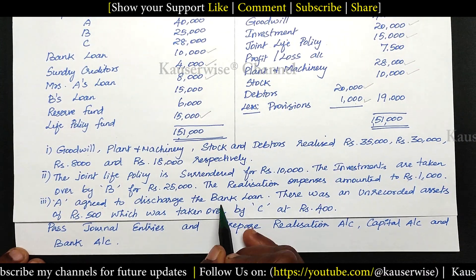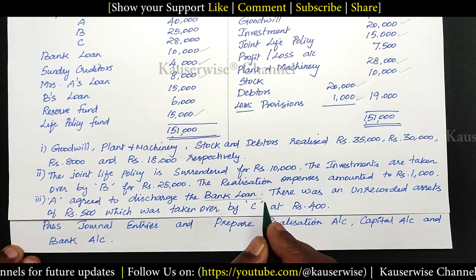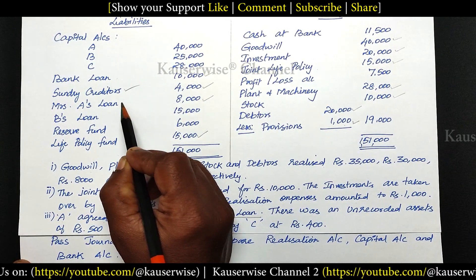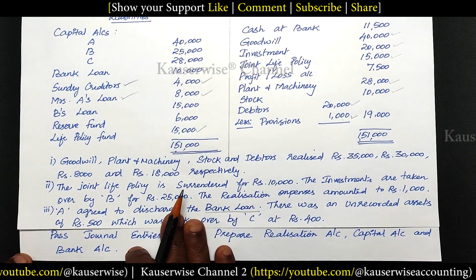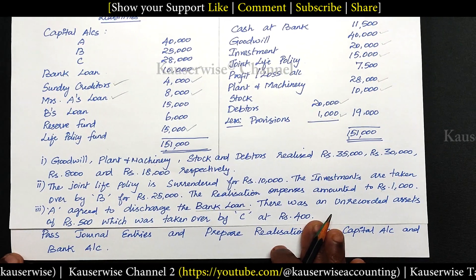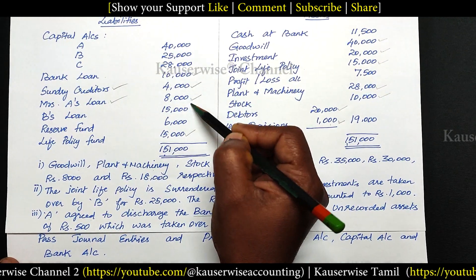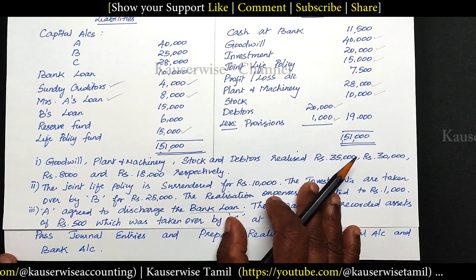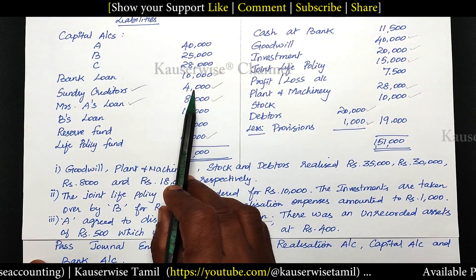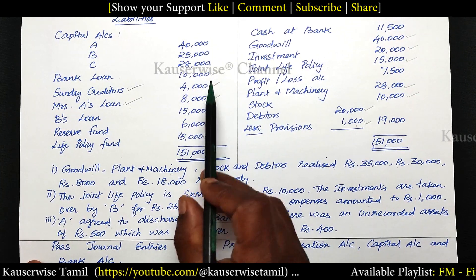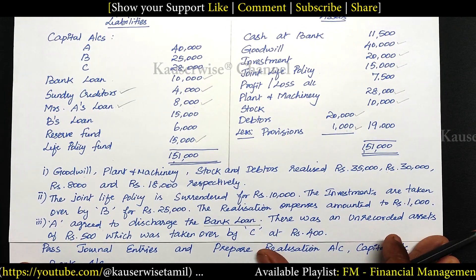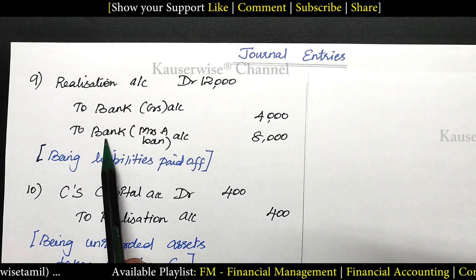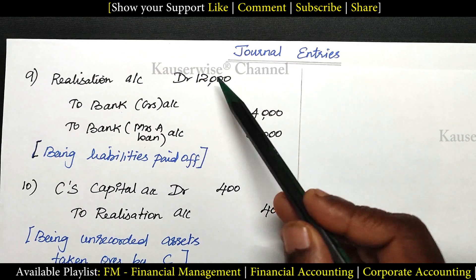Apart from bank loan, we have two other third-party liabilities: sundry creditors and Mrs. A's loan. Nothing is mentioned regarding these two, but it is mandatory to repay third-party liabilities first, whether the information is given or not. Creditors: 4,000 and Mrs. A's loan: 8,000. Entry: Realization Account Dr. to Bank — 4,000 for creditors, and to Bank — 8,000 for Mrs. A's loan — total 12,000 — being third-party liabilities paid off.